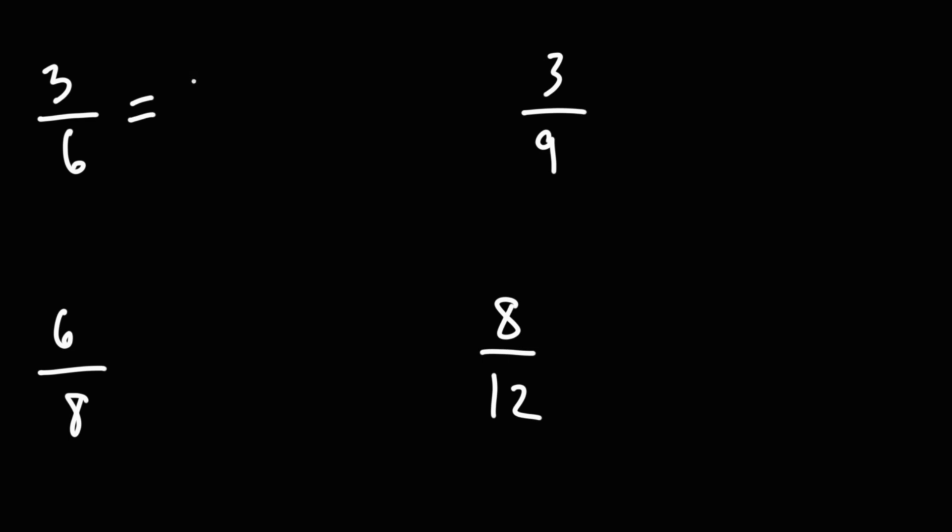3 over 6, well 3, we can write 3 as 3 times 1, and 6 is 3 times 2. Notice that we could cancel a 3. 3 divided by 3 is 1.